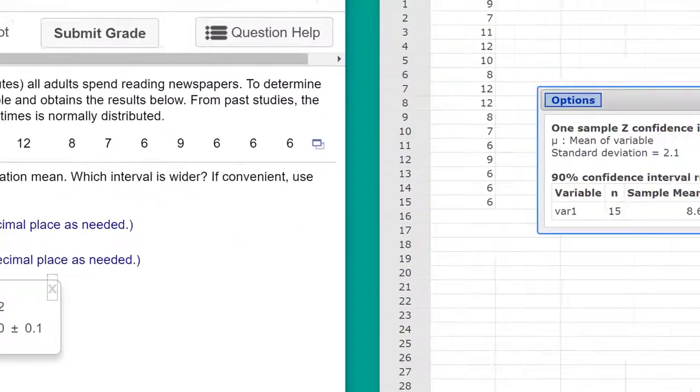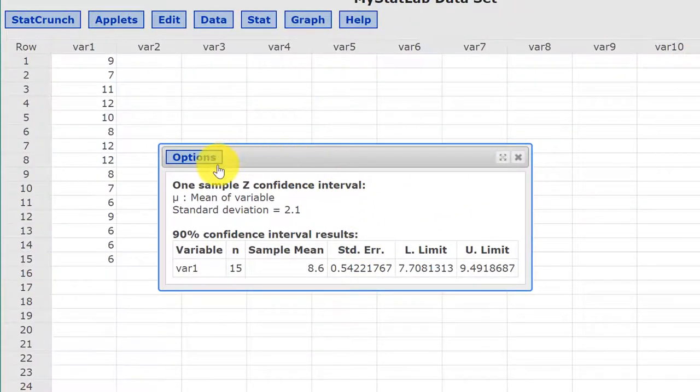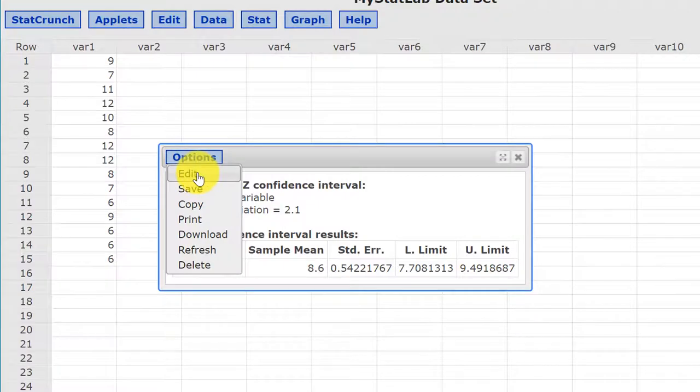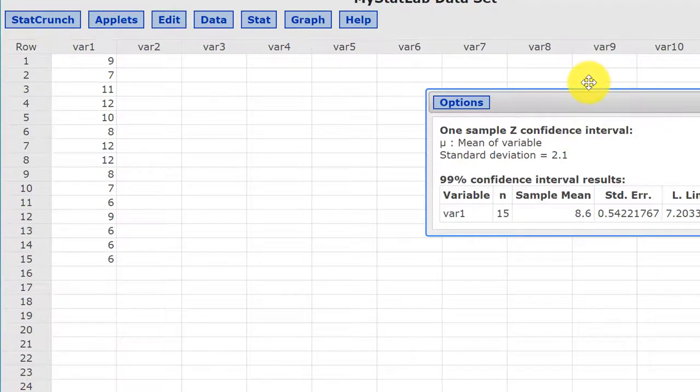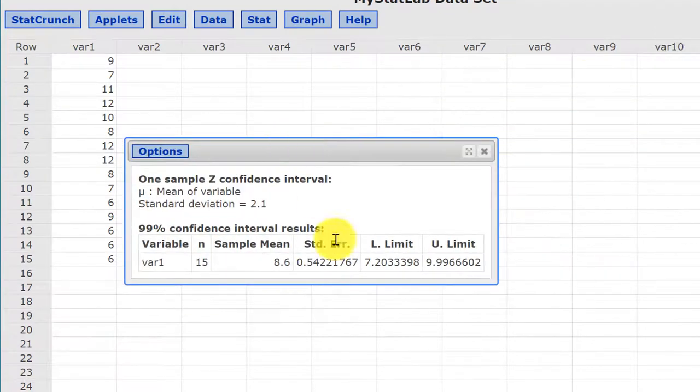what is the 99% confidence interval, and all we have to do in StatCrunch is click on Options, click on Edit, and then we go back here and just change our confidence interval to 0.99 for 99%, click Compute again, and StatCrunch updates.